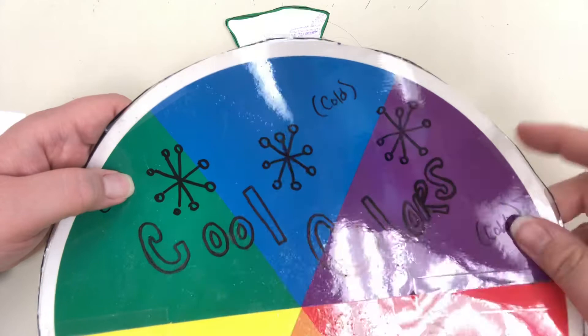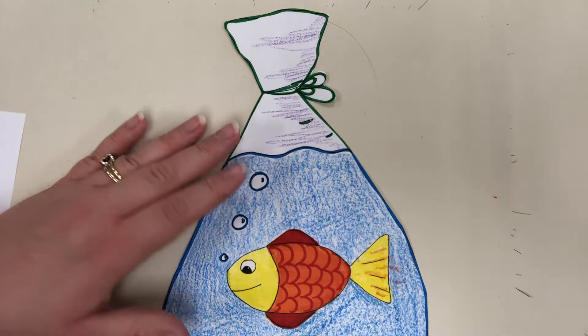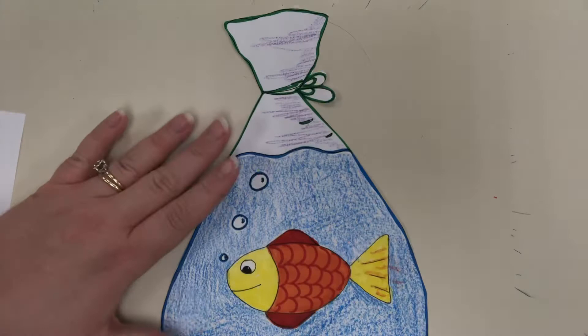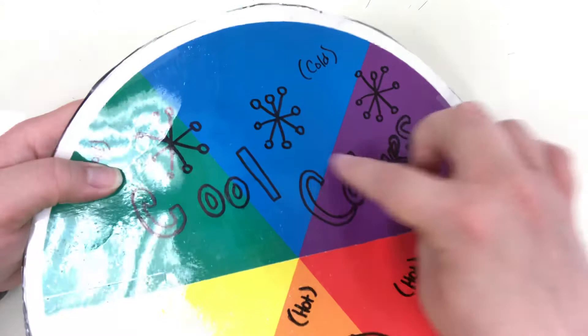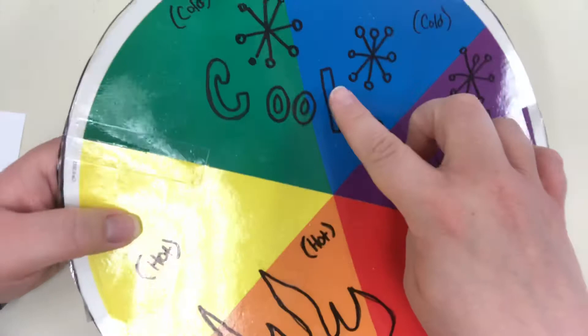Now when we use warm colors against cool colors, since they're opposite on the color wheel, they really stand out from each other. It creates something called contrast. If I had colored this fish purple, it's not going to have as strong of a contrast between the blue because purple and blue are right next to each other on the color wheel. They're not opposites. But since I colored the fish orange, orange and blue are opposites on the color wheel. So it makes it really stand out. That's called contrast.